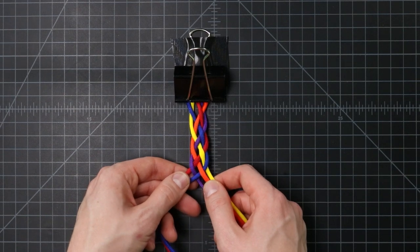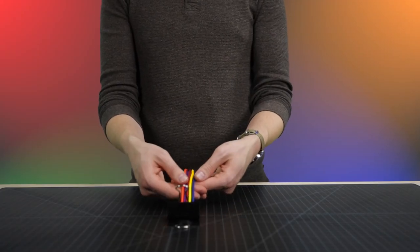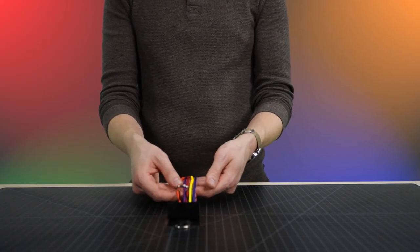There we have our five-strand plate. With five strands, we can also do a traditional braid, like we did with our three.